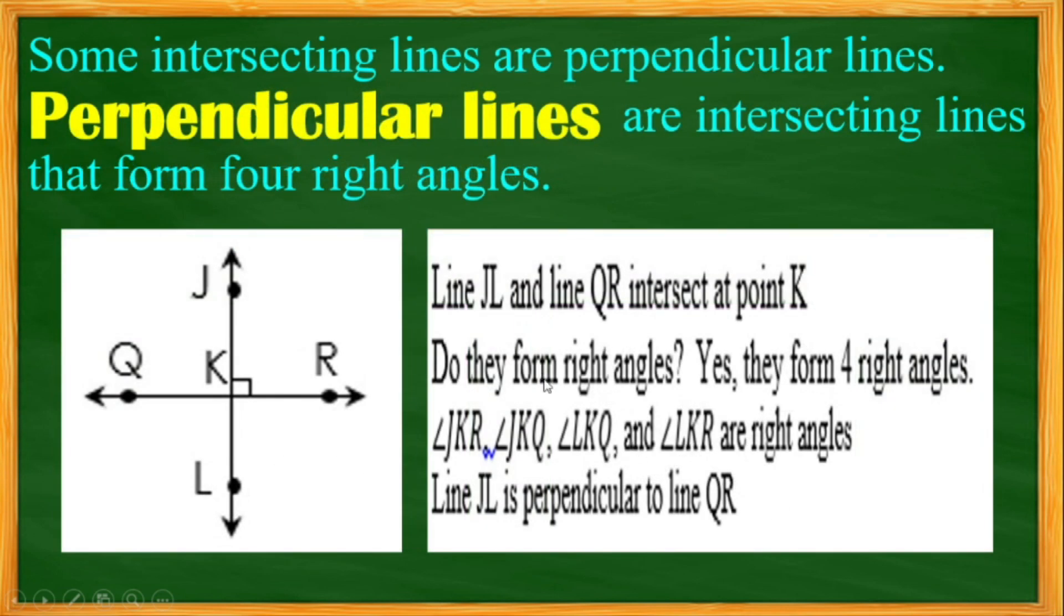Some intersecting lines are perpendicular lines. Perpendicular lines are intersecting lines that form four right angles. Again, this would be the restriction to be a perpendicular line: to form an intersecting line with four right angles.